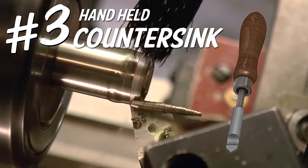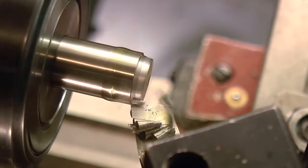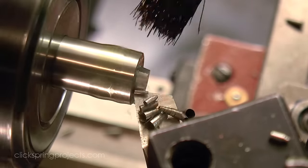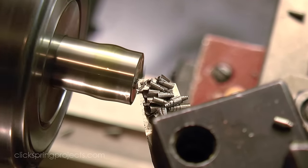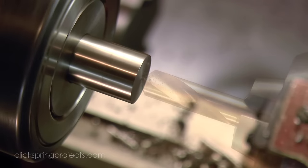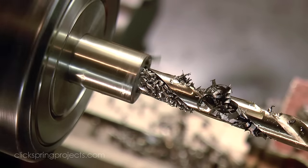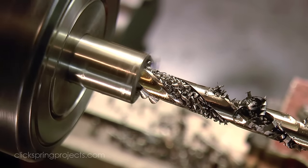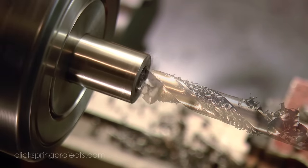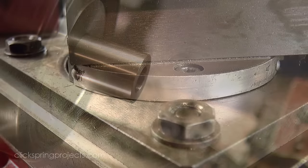Next up is a single lift countersink. I've provided drawings for both a handheld and a chucked version, but the essential concept is the same for each. And although it's not critical for the handheld version, it can be helpful to have the included angle on the chucked version set to 88 degrees to make sure that the screw seats at the very top of the tapered section of the hole.